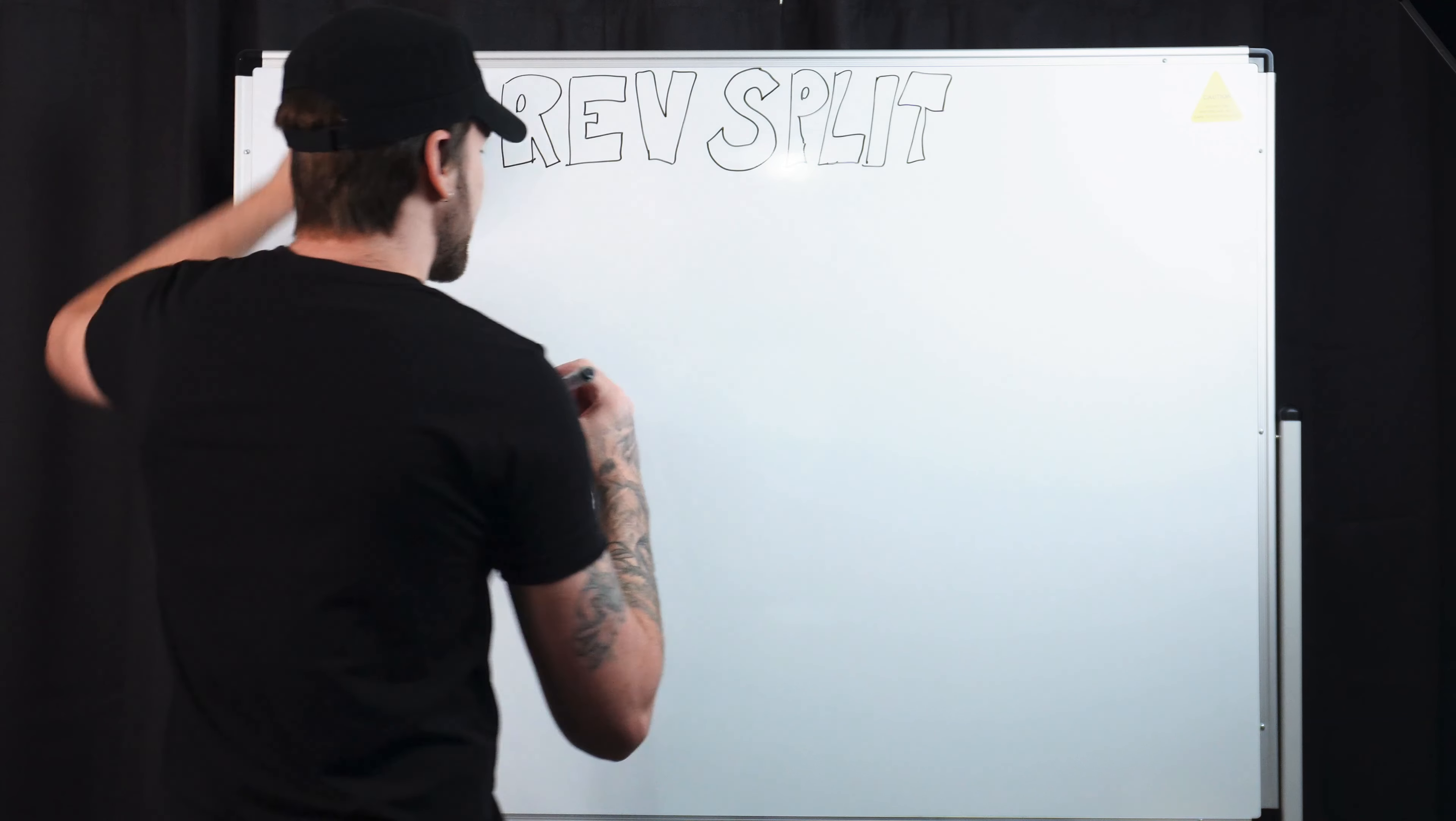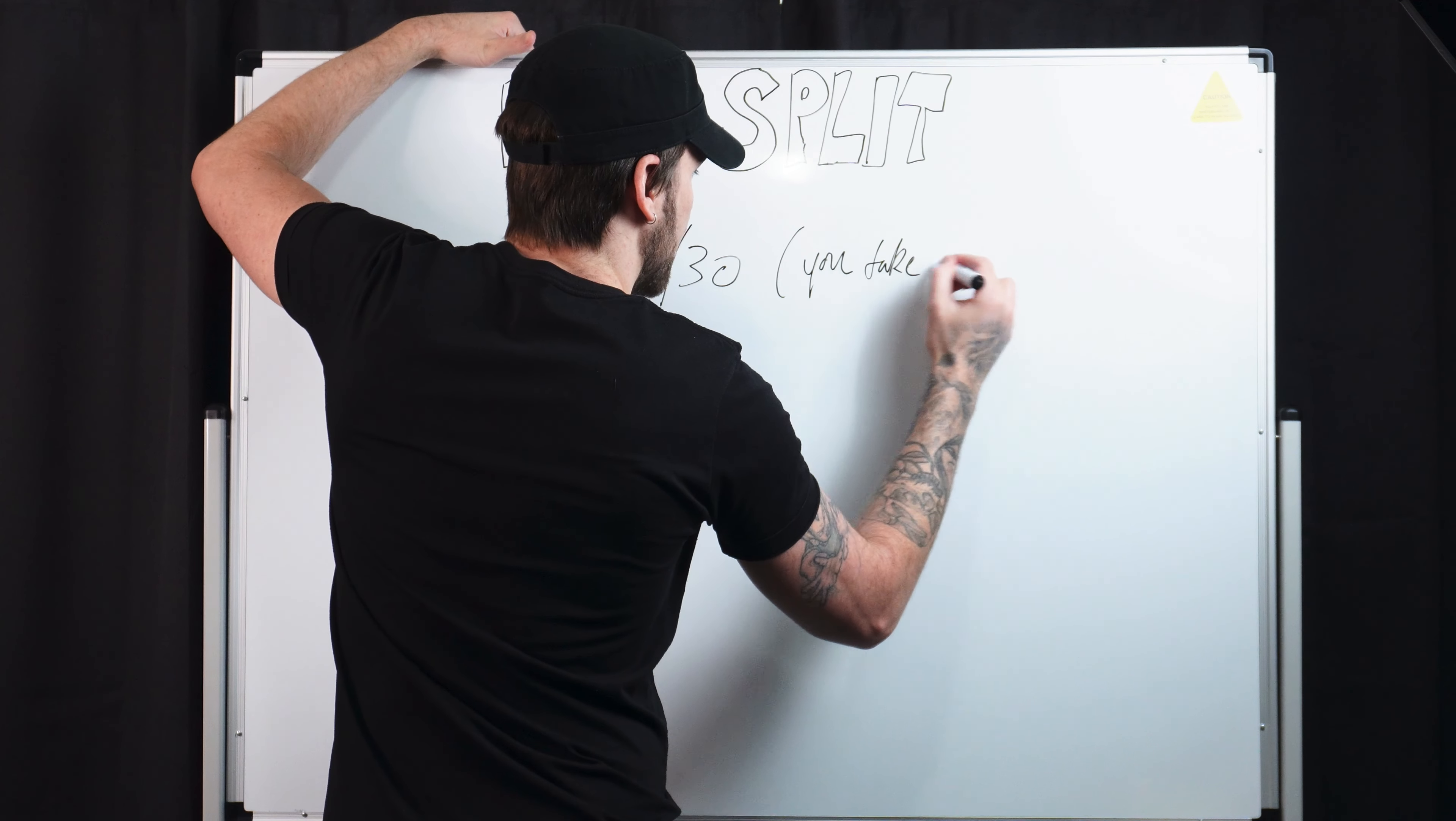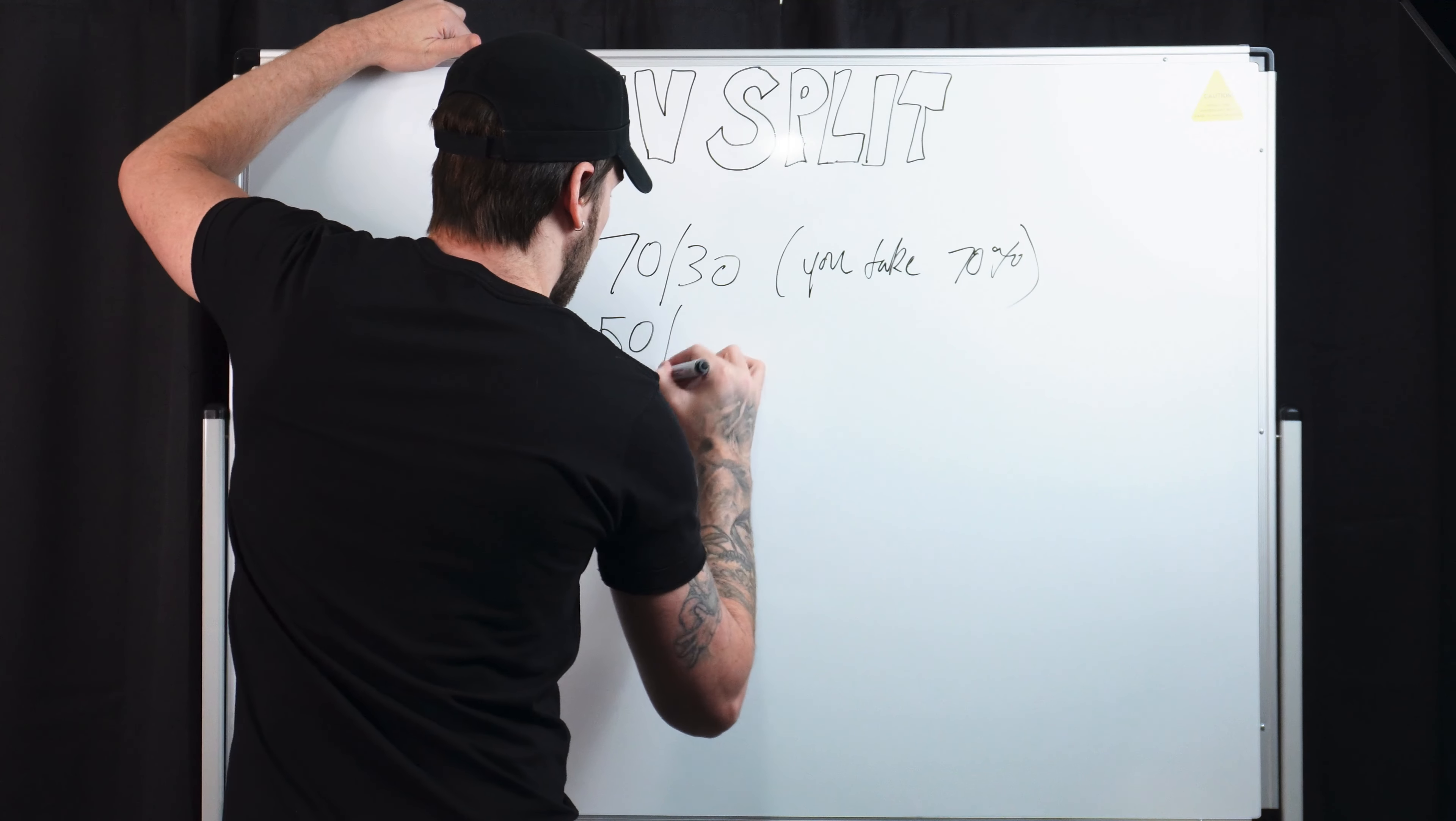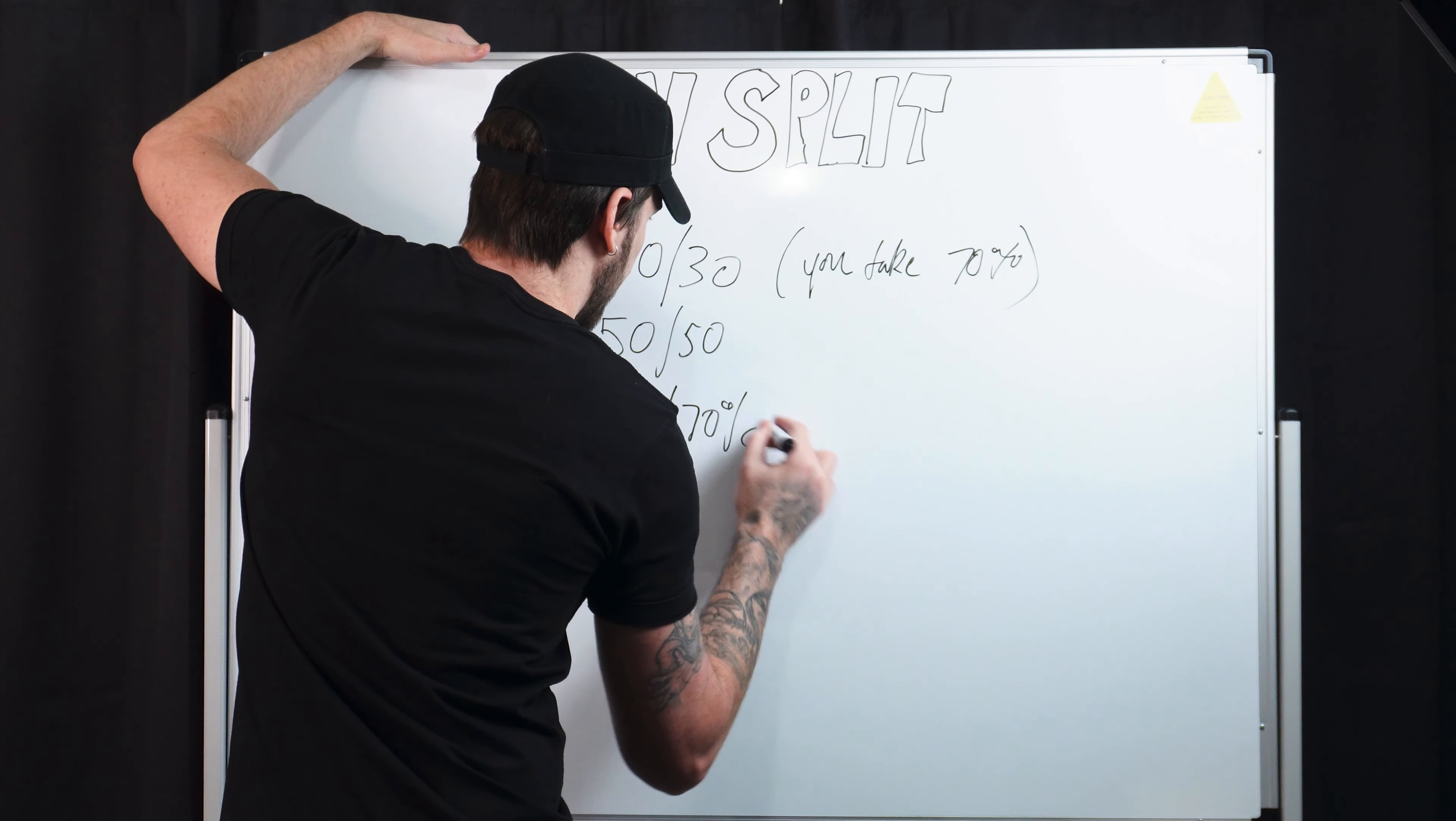Alright, so the most common revenue split options that I see people proposing are 70-30. So that's you take 70, model takes 30. The other one is 50-50 and the other one I've seen people do is 30-70 but the other way.